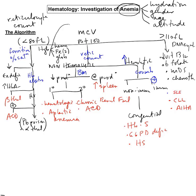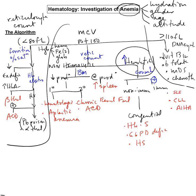Everyone has to be able to write this on a blank piece of paper, because you're going to use it all your life. The fundamental divisions are: decreased hemoglobin production — microcytic; abnormal DNA synthesis — macrocytic; and then increased loss versus decreased production for normocytic. Increased loss is hemolytic — is it immune or non-immune? So the big categories are quite evident.